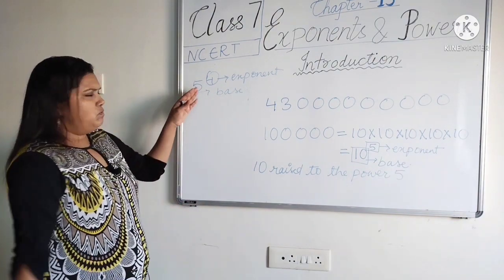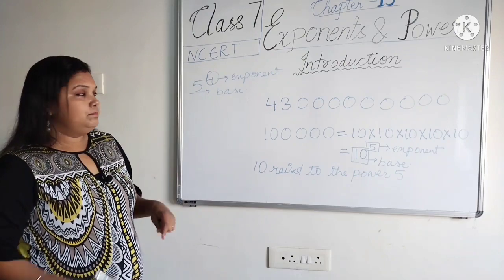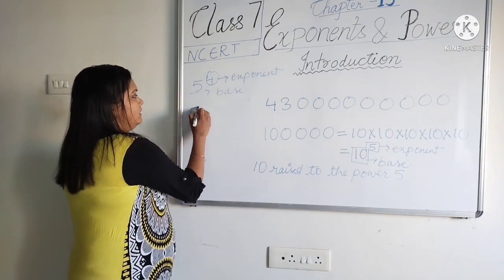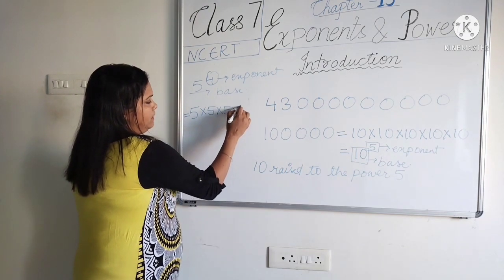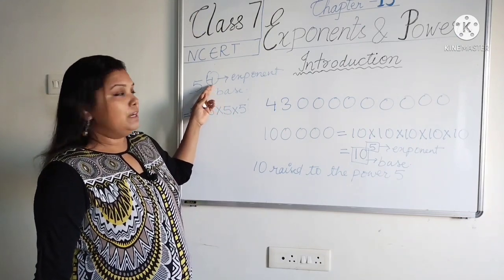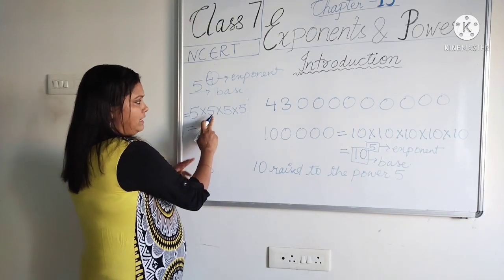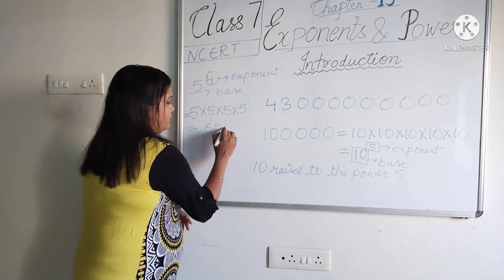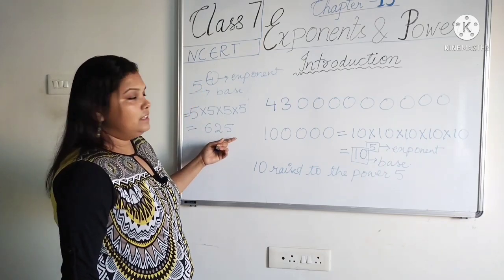What does 5 raised to the power 4 mean? It means 5 is going to be multiplied 4 times — that is, 5 × 5 × 5 × 5 — because the base is multiplied by itself as many times as the exponent. So: 5 × 5 = 25, 25 × 5 = 125, and 125 × 5 = 625. Therefore, 5 raised to the power 4 equals 625.